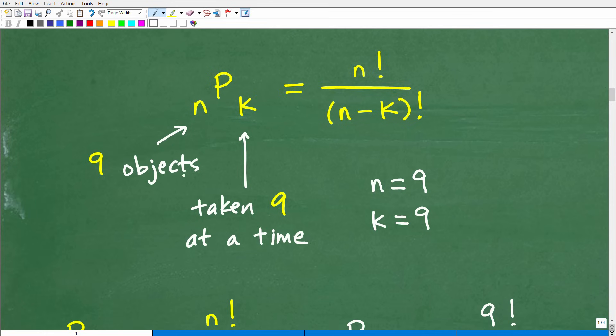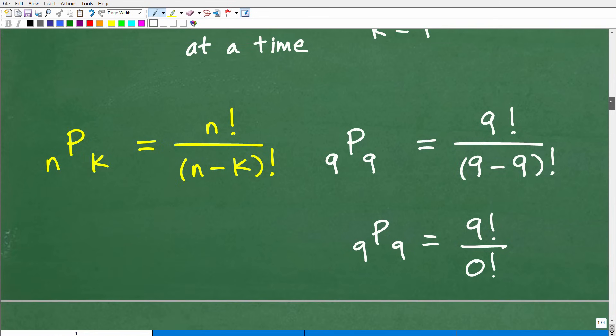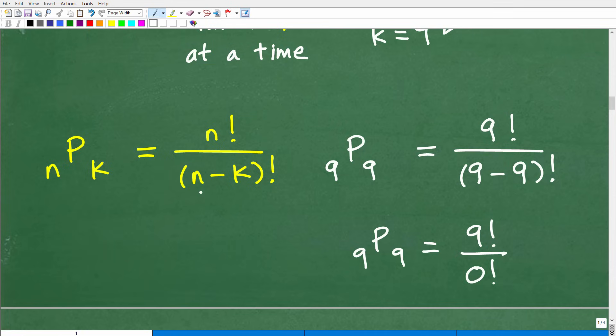All right. So again, we have nine objects, nine letters. We're going to take all nine of them at a time. So N K is nine and K is nine as well. So we need to plug this into this formula and work out this math. Okay. So here it is. NPK is equal to N factorial over N minus K factorial. So this is 9P9 is equal to N factorial. So that's nine factorial. Again, some of you are like, what is that factor? I'm going to explain that in one second, just one second. So N minus K is going to be nine minus nine factorial. So this is all going to end up being nine factorial over zero factorial. This will tell us the answer.